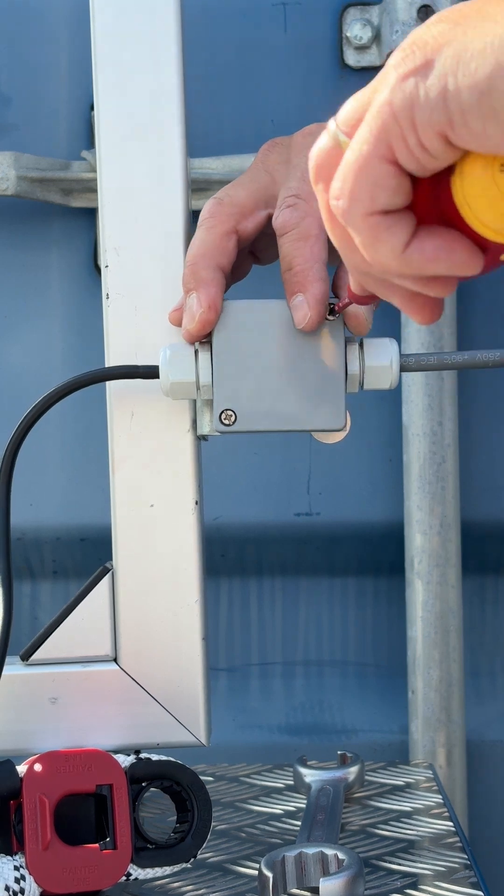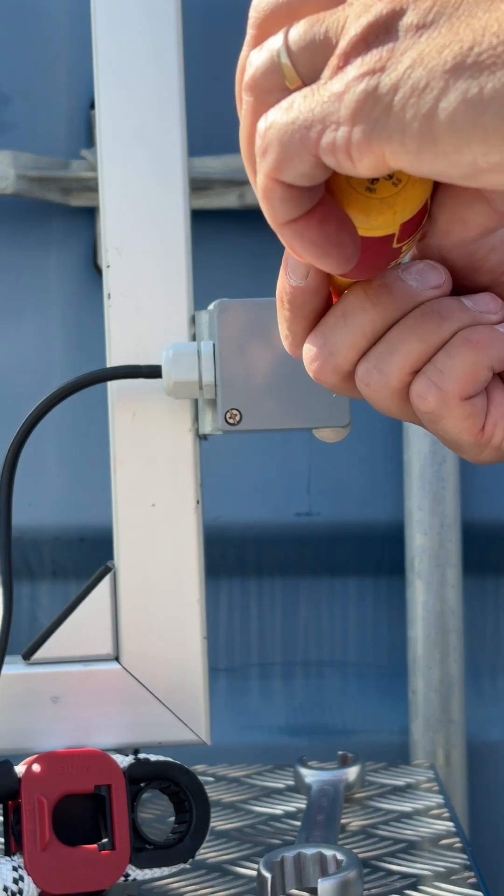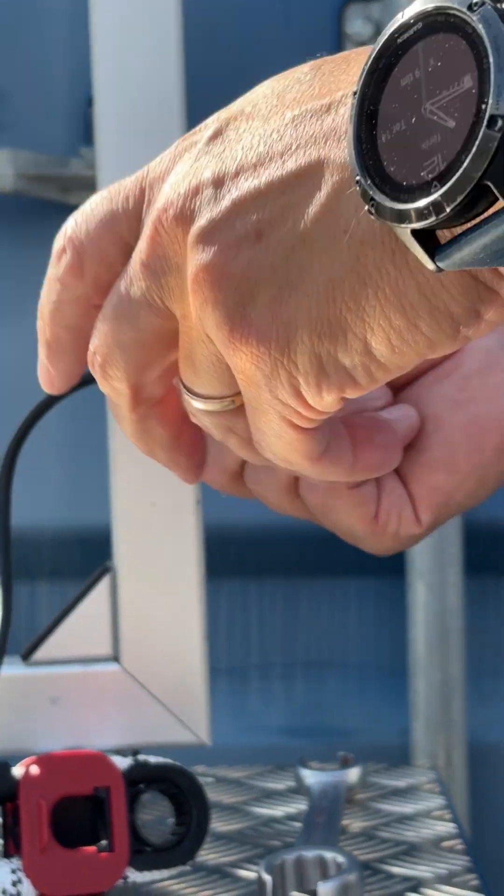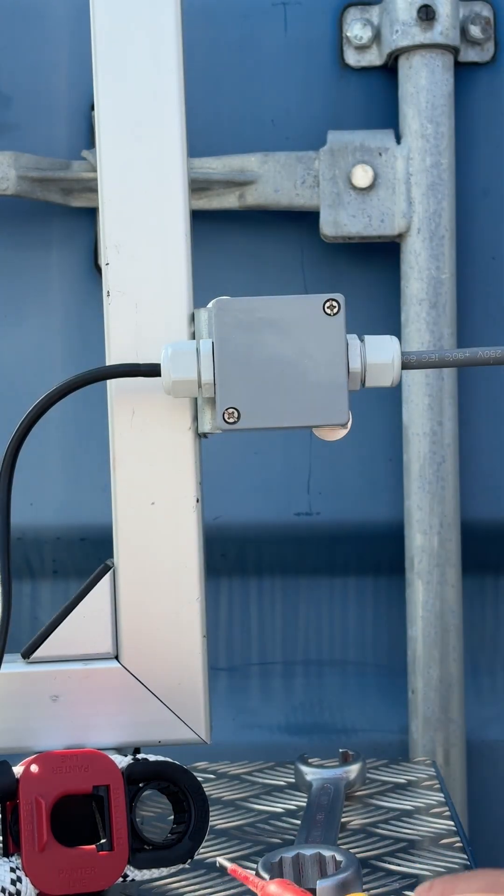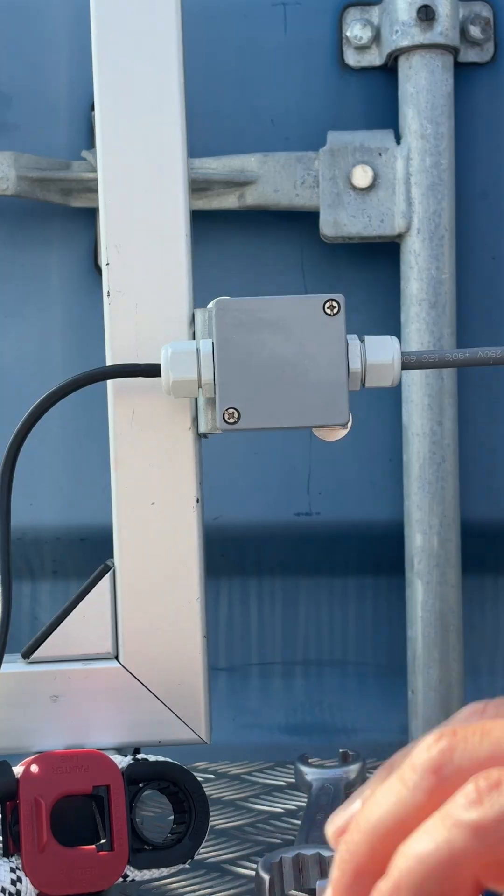Use the screwdriver to close up the connector box. Your ERU is now connected to the ERS. Thank you for watching.